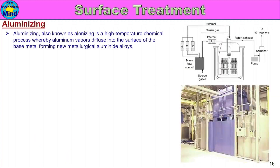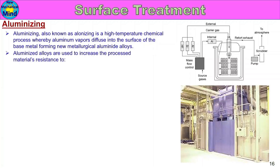Aluminizing, also known as alonizing, is a high temperature chemical process whereby aluminum vapors diffuse into the surface of the base metal, forming new metallurgical aluminide alloys. Aluminized alloys are used to increase the processed material's resistance at the base metal surface.